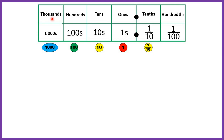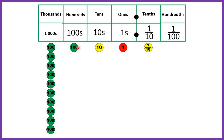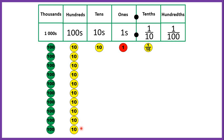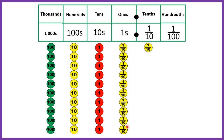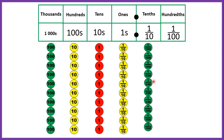We know our place values for thousands, hundreds, tens, and ones. Then we have a decimal point to separate our ones from our tenths, and now we know that the place value after the tenths is the hundredths place. So 1,000 is the same as having 10 hundreds; 100 is the same as having 10 tens; and 10 is the same as 10 ones. This carries on into decimal place values as well: 1 is the same as having 10 tenths, and 1 tenth is the same as having 10 hundredths.